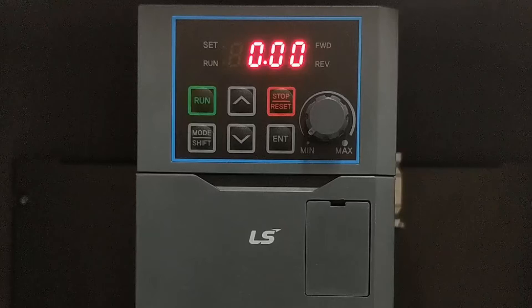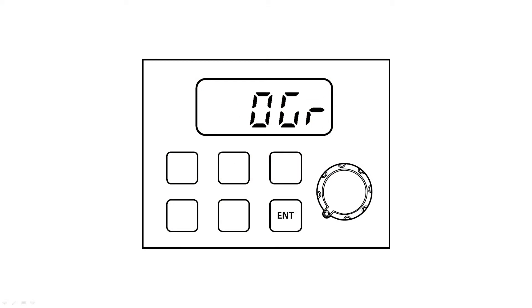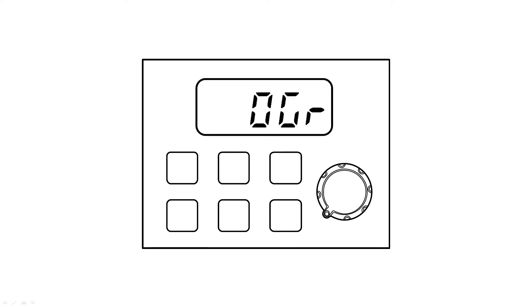If you have an M100 drive, it is important to note that only 18 parameters in the first group are accessible from factory default. To unlock other parameters, go to OGR, press Enter, set it to 1, and press Enter twice. Then press the Mode Shift key to return to the commanded speed reference.